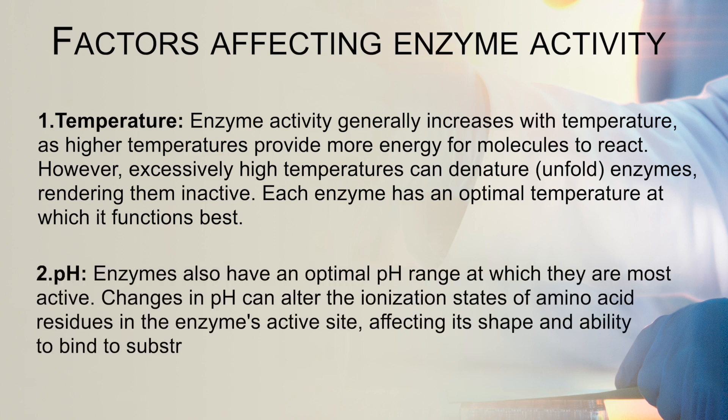The next factor is pH. Enzymes also have an optimal pH range at which they are most active. Changes in pH can alter the ionization state of amino acid residues in the enzyme active site, which in turn affects its shape and ability to bind to the substrate.